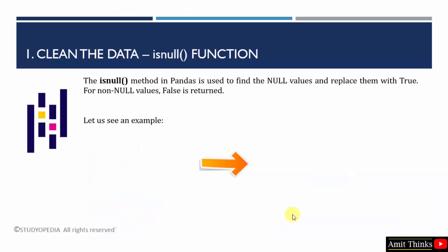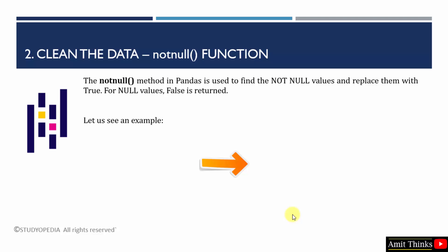We saw how to use the isnull method. The second example covers the notnull method. This method finds the not-null values and replaces them with True — the opposite of the previous method. For null values it will return False. Let's see the example.